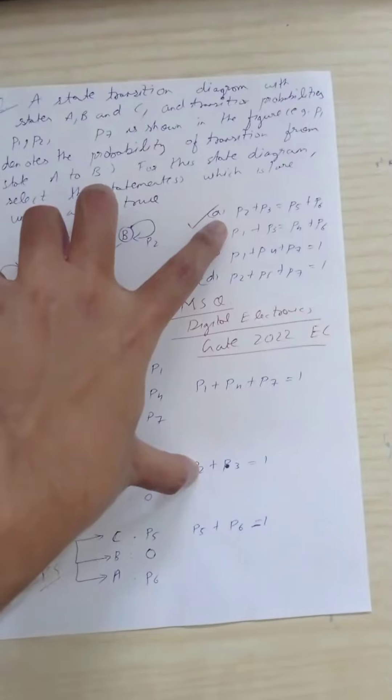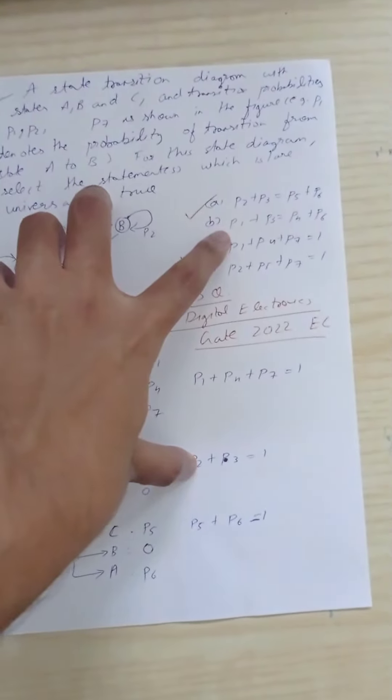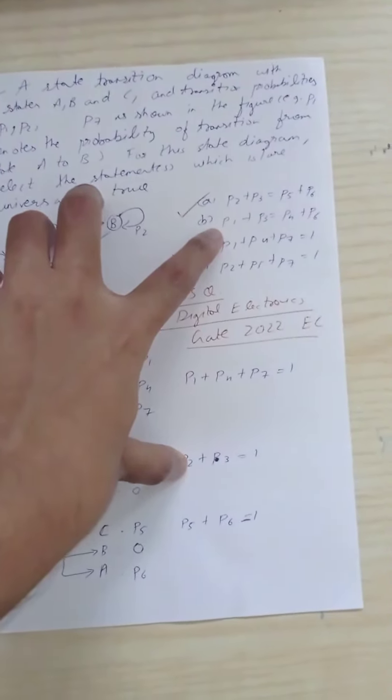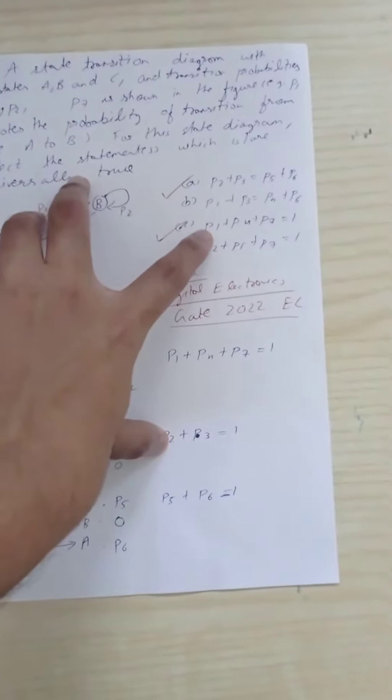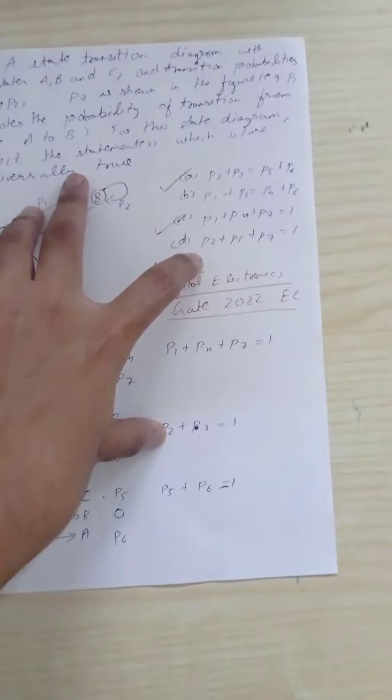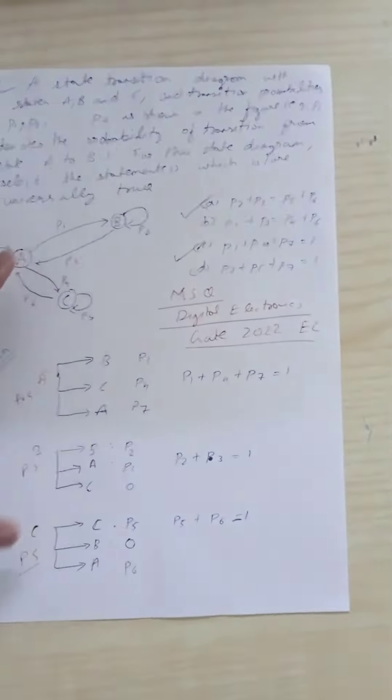First statement: P2 + P3 = P5 + P6. Second statement: P1 + P3 = P4 + P6. Third statement: P1 + P4 + P7 = 1. Fourth statement: P2 + P5 + P7 = 1.